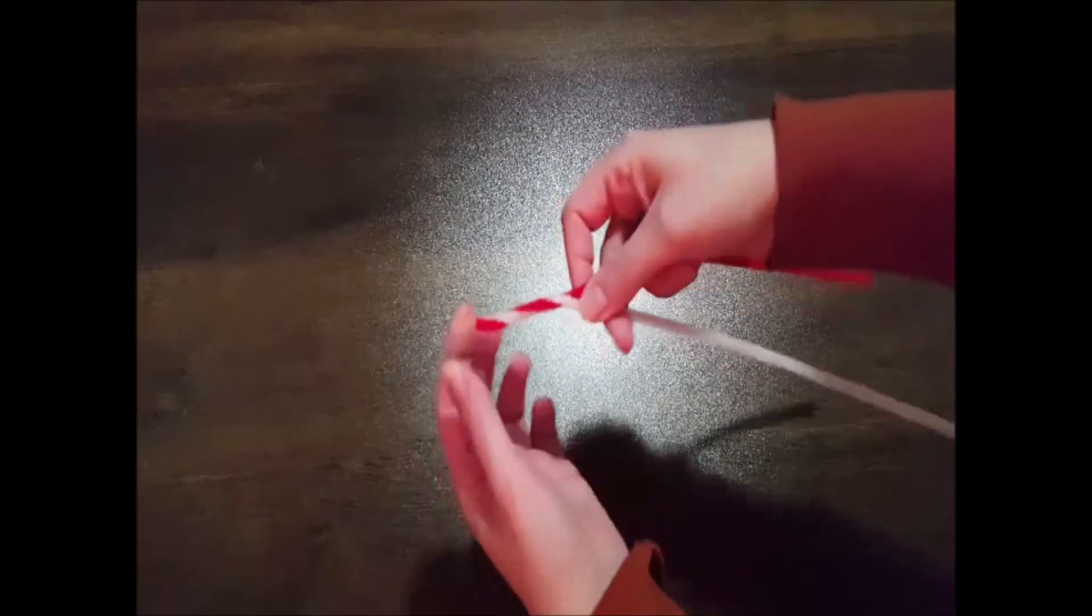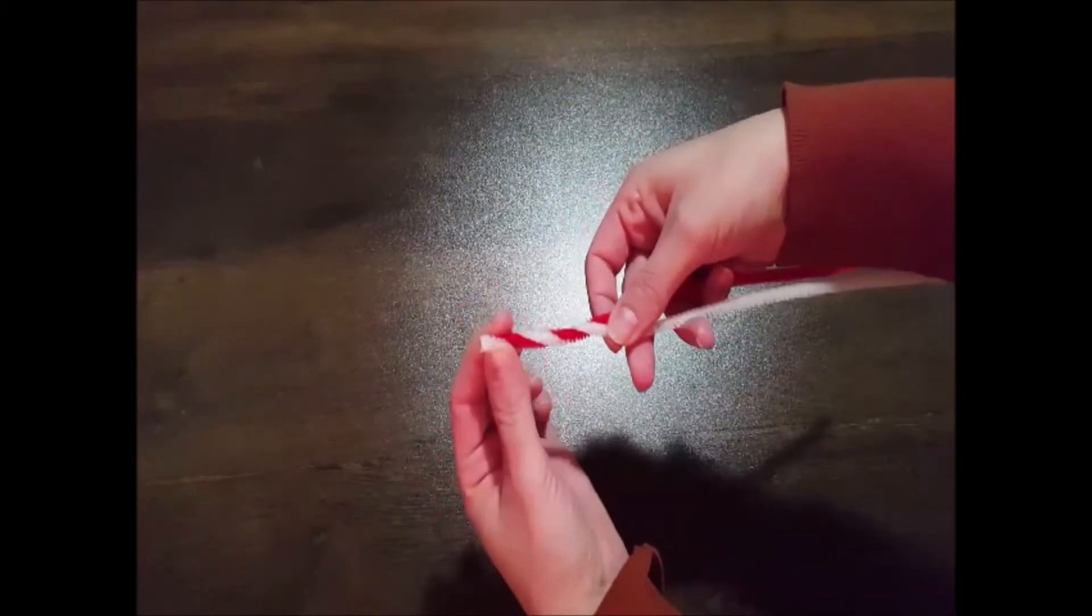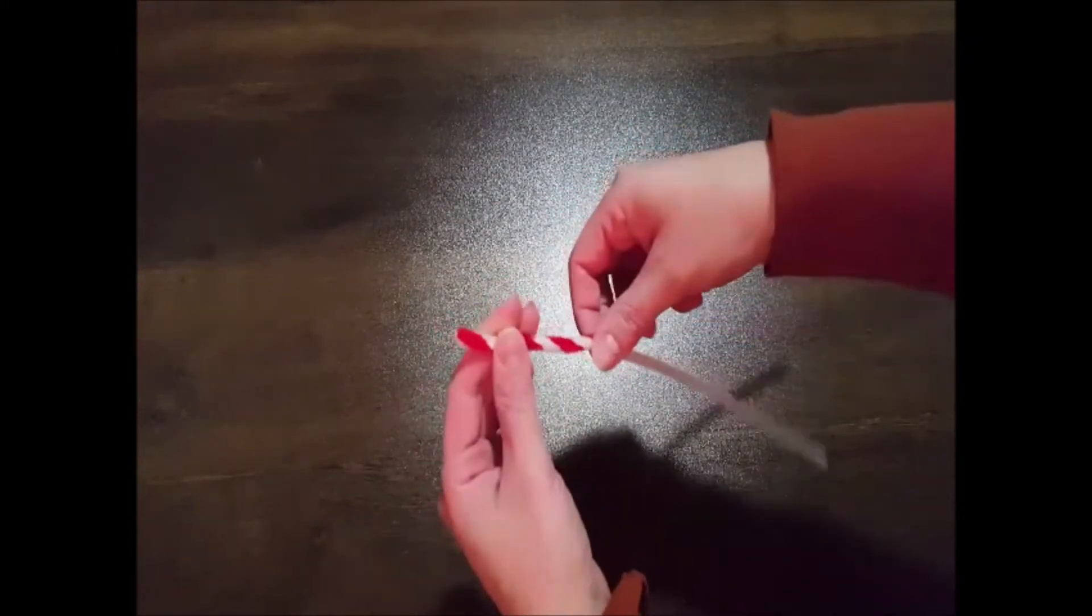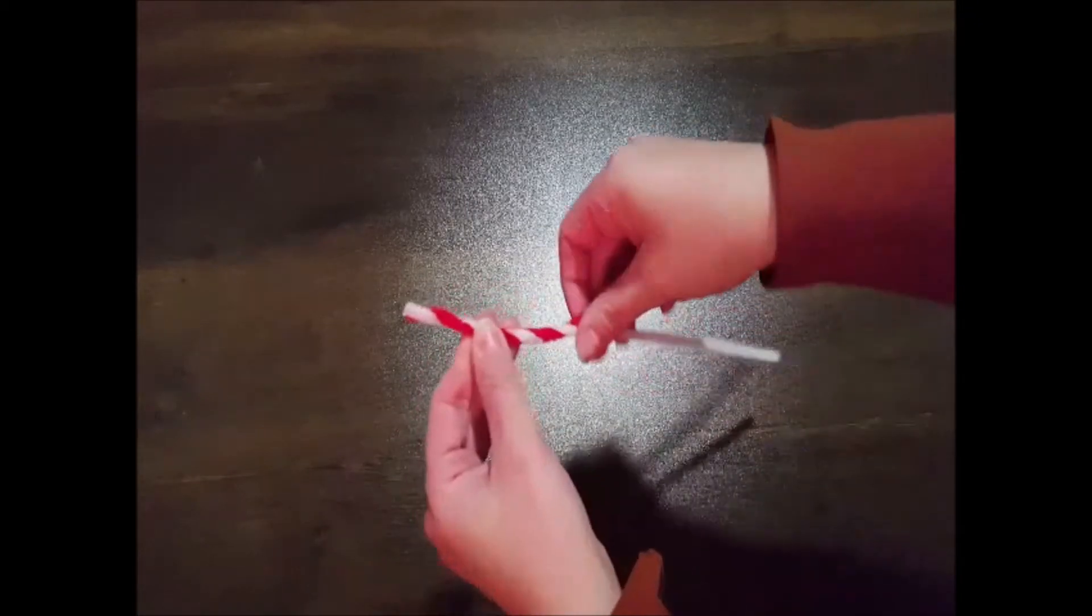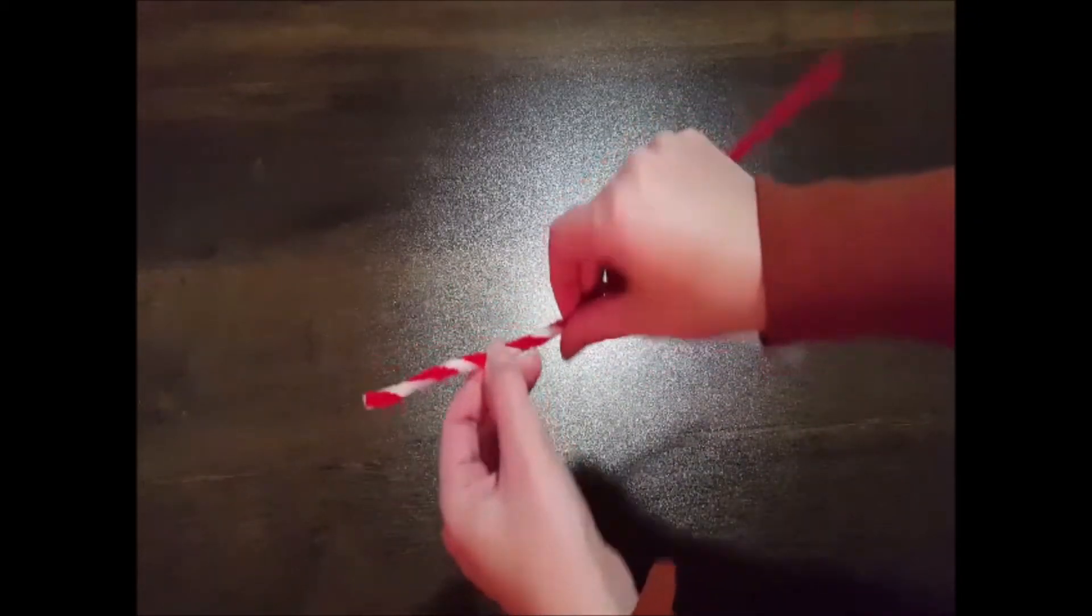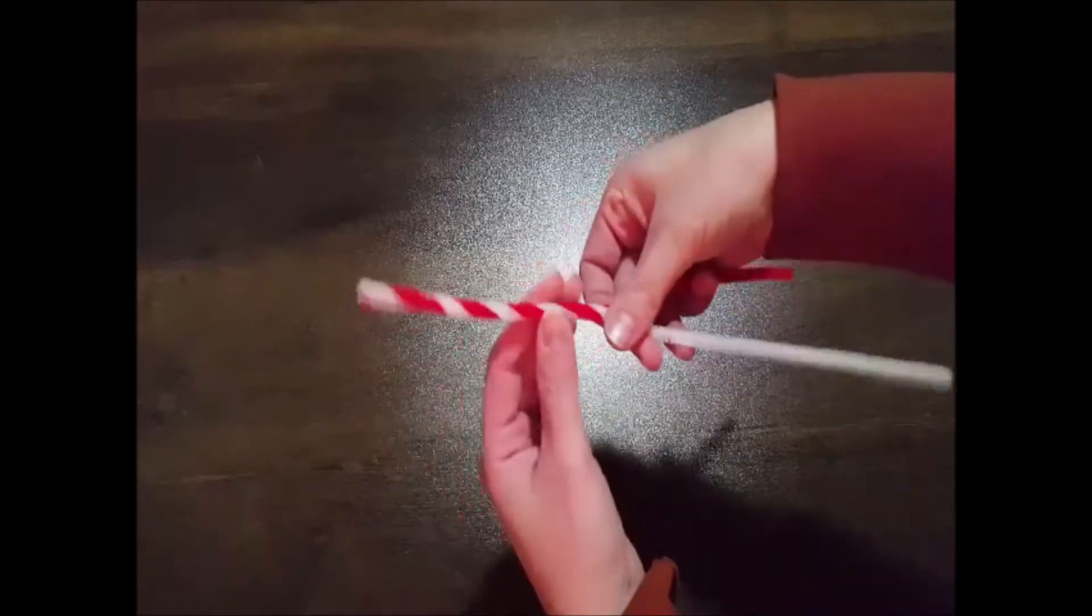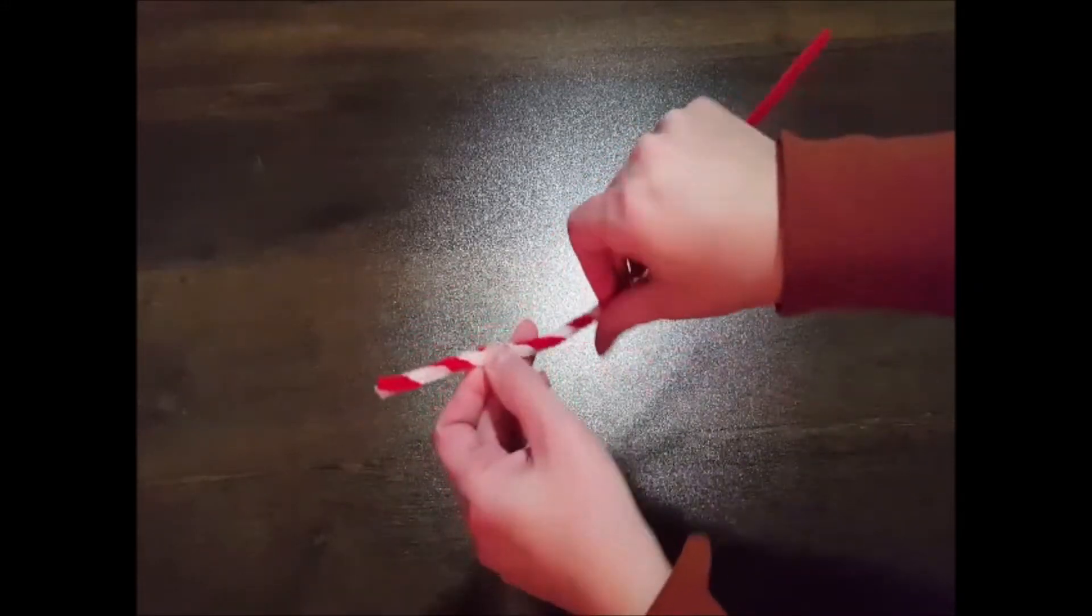I do this in a very consistent motion. You want the spirals of the candy cane to remain even. Continue along the entire length of the candy cane until you've wrapped the two pipe cleaners around each other fully.